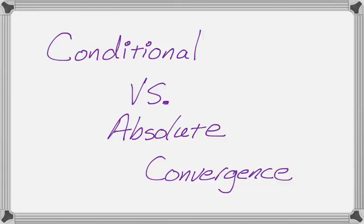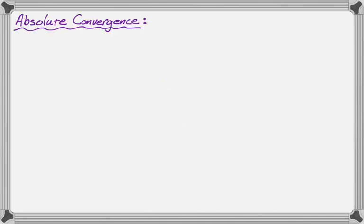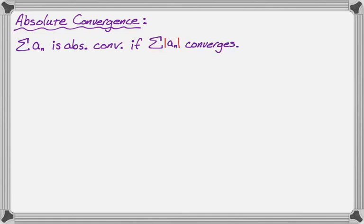In this video we're going to talk about conditional versus absolute convergence. So let's get started. Absolute convergence: we'll say a series — the sum of a sub n — is absolutely convergent if the sum of the absolute value of a sub n converges.